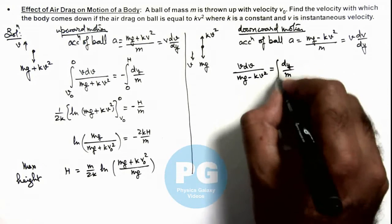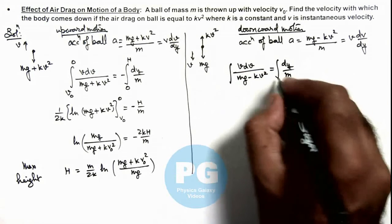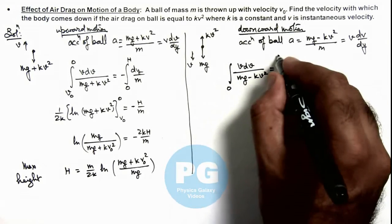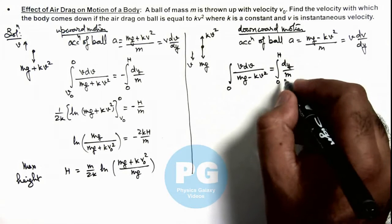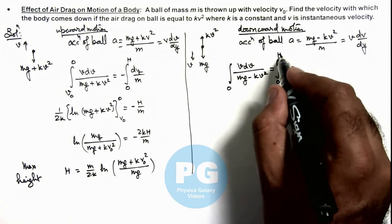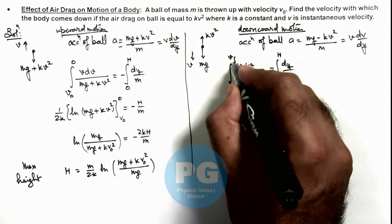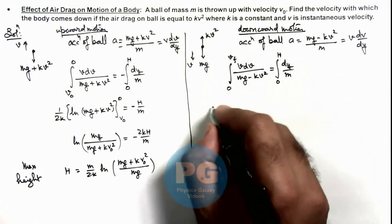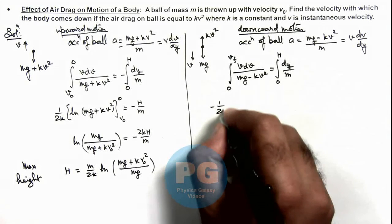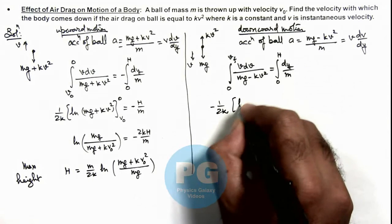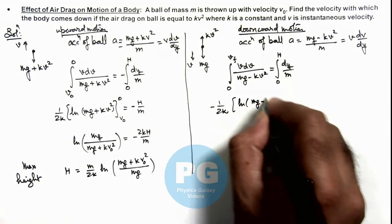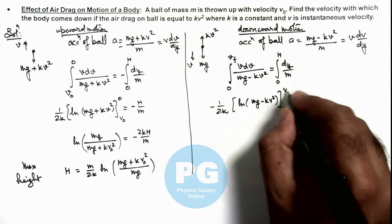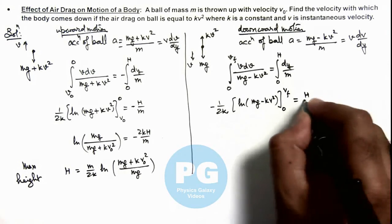And further if we integrate it, at y equal to zero that is at the topmost point its speed was zero, and at the bottommost point of motion when it'll come back to ground so its speed becomes v_final, which we are required to find. So on integrating this will give us minus 1 by 2k, this is ln of mg minus kv², and we put limits from zero to v_f and on right hand side it is H by m.